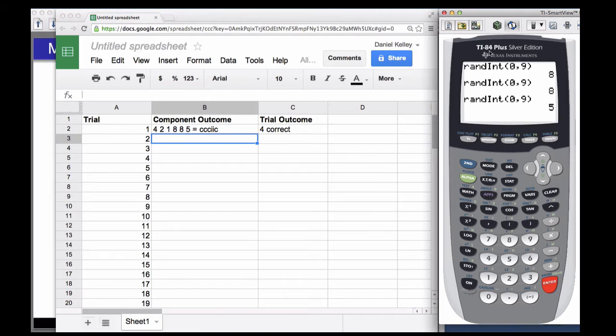Okay, so I also don't have to generate these random integers one at a time. If I use that same randint function and I ask for 0 to 9 six times, it will give me six random integers at once. And I can use this to represent an entire trial. That will save me a little bit of time here.